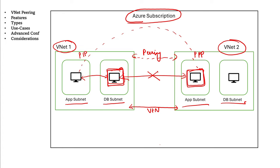Now let's discuss the different features of virtual network peering. Because it uses the backbone network of Microsoft, there will be low latency and high bandwidth. There will be no downtime because this is managed by Azure and redundancy is in place. Your peering connection will always be up, and using virtual network peering you can do transitive connectivity, gateway transit, as well as service chaining — which I'll explain in the advanced configuration section.